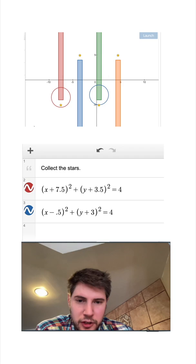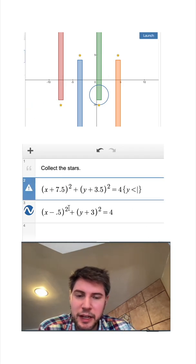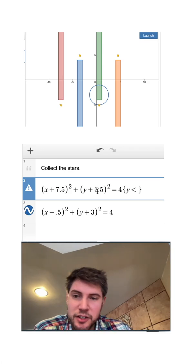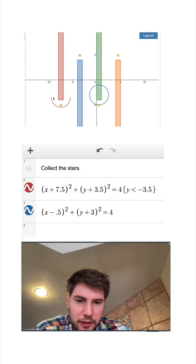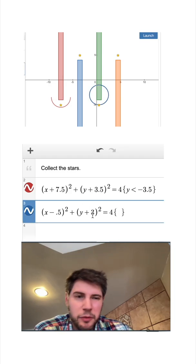So now if I hit launch, hopefully it hits the circle. Good. Now we need to make a restriction, and I'm going to make it cut at the center. Since the center is at negative 3.5, I'm going to say negative 3.5 to cut it right at the middle of the circle. Same thing here, this one's at negative 3.